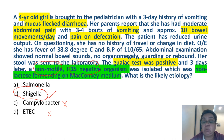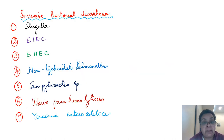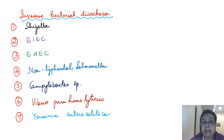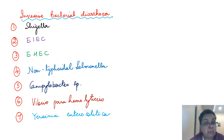Let's quickly go through the causes of invasive bacterial diarrheas. These are Shigella, entero-invasive E. coli, entero-hemorrhagic E. coli, non-typhoidal Salmonellas, Campylobacter species, Vibrio parahaemolyticus, and Yersinia enterocolitica. All these are causes of invasive bacterial diarrheas.